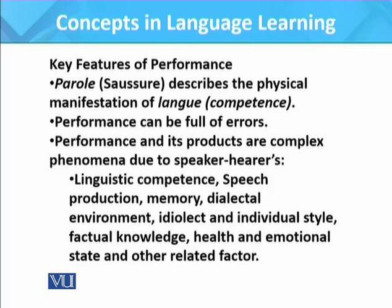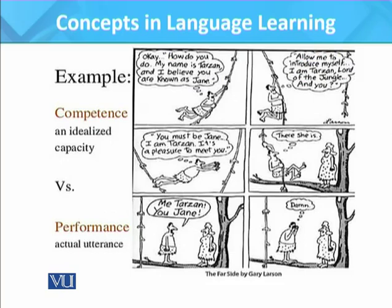Performance and its products are complex phenomena due to the speaker-hearer's linguistic competence, speech production, memory, dialectical environment, idiolect and individual style, factual knowledge, health and emotional state, and other related factors. These factors influence performance in a given situation. For example, one can have knowledge of language in terms of vocabulary, sentence structure, pragmatic information, and phonological information, but when it comes to actual performance, there is no guarantee that one can deliver or perform appropriately.